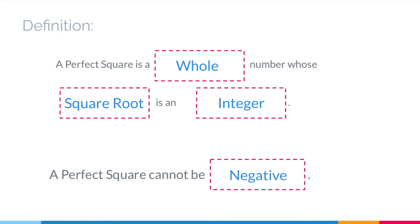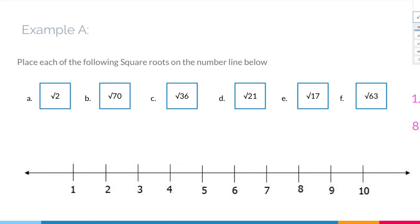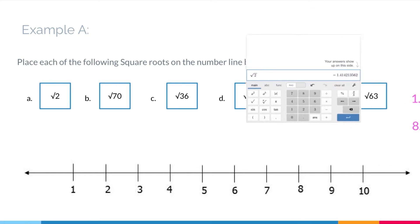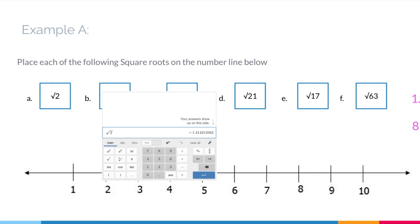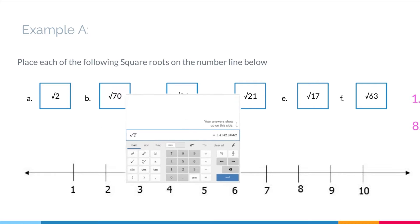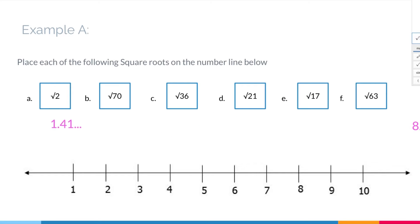Now let's look at Example A: place each of the following square roots on the number line. We have a slight issue — letter A says the square root of 2, which is not a perfect square. To figure out where it belongs on the number line, I'll use the Desmos calculator. I've typed in the square root of 2 and it says 1.412... so I'll write 1.41 with three dots indicating it goes on and on.